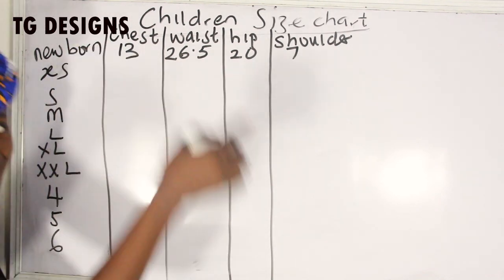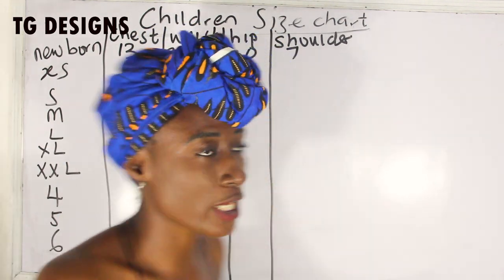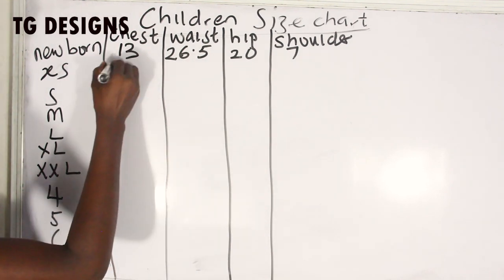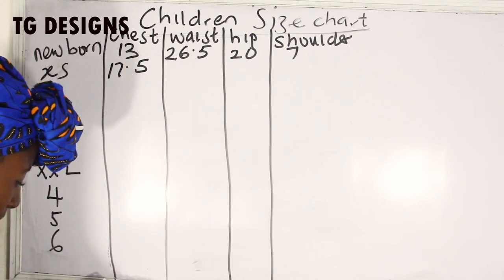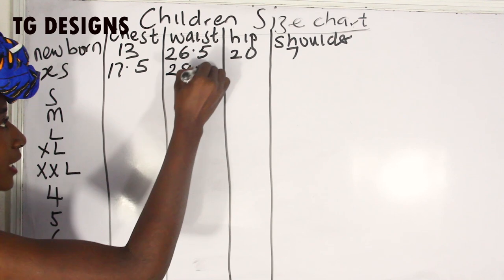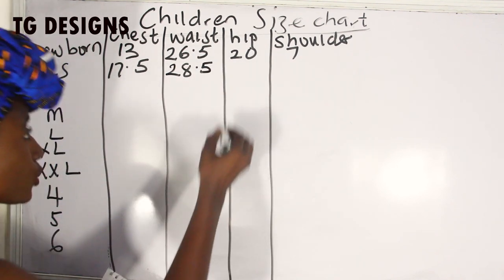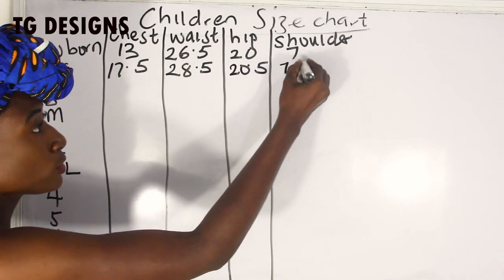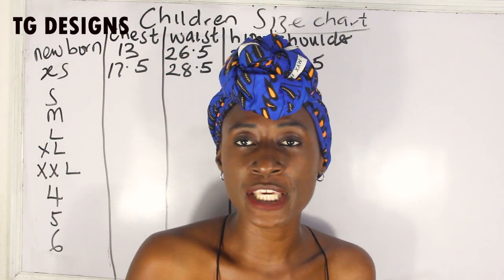The next one we have is XX, which simply means extra small. The chest for extra small is 17.5 inches, the waist is 28.5 inches, the hip is 20.5 inches, and for the shoulder we have 7.25 inches.